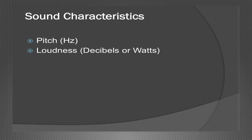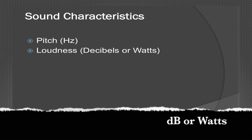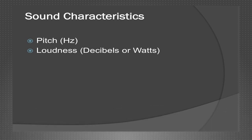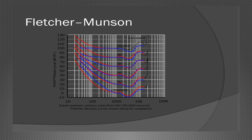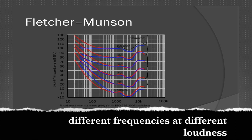The loudness is defined as the sound power per unit area, and is related to the amplitude of the sound. It is usually measured in decibels or watts. The tone is the characteristic by which, at the same frequency, it is possible to distinguish the sound of one instrument from another — for example, a flute and a guitar. The loudness is also determined by the sensitivity of the ear at different levels of loudness, as specified by the Fletcher-Munson curves. In fact, we hear different frequencies at different levels of loudness.